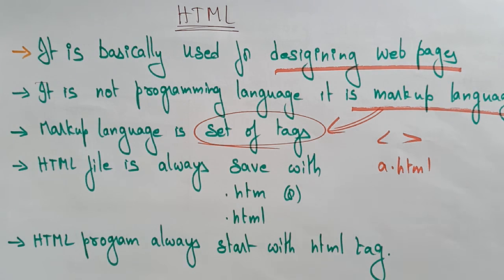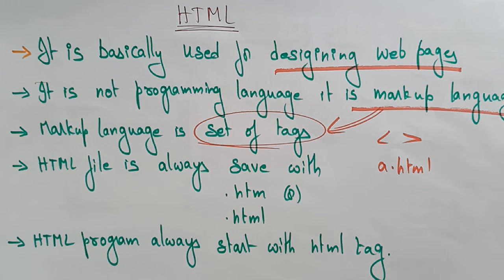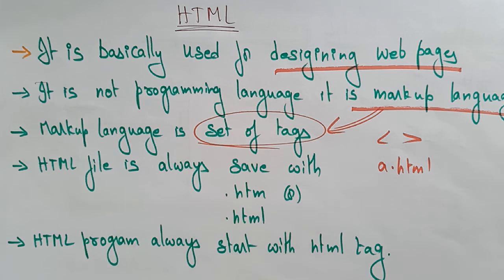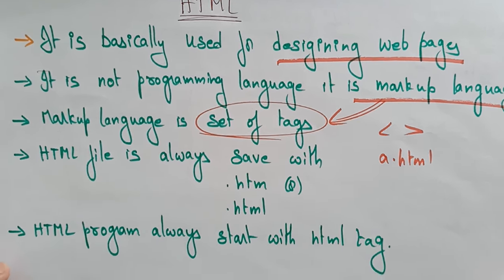If the file is saved as a .doc or similar, the complete code will appear as plain text on the web page. If you want to display the designed web page, you must save the file as .html. Don't forget to save it as .html.